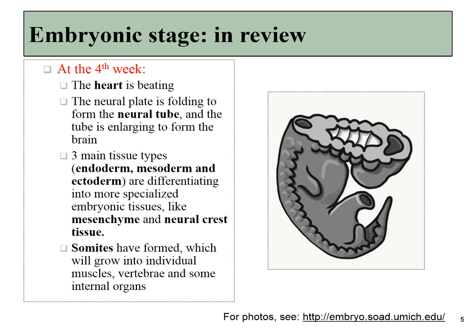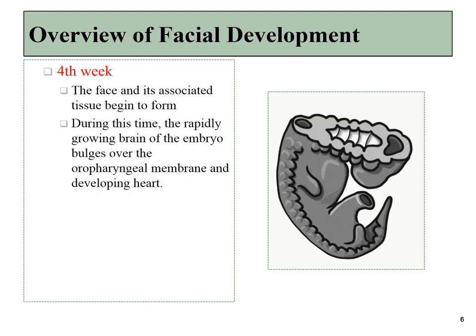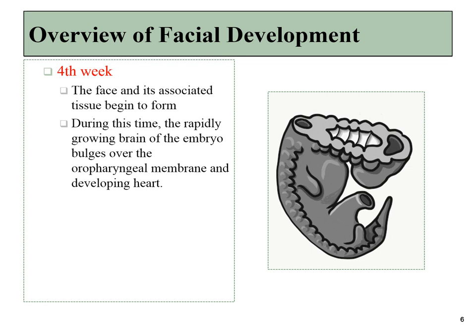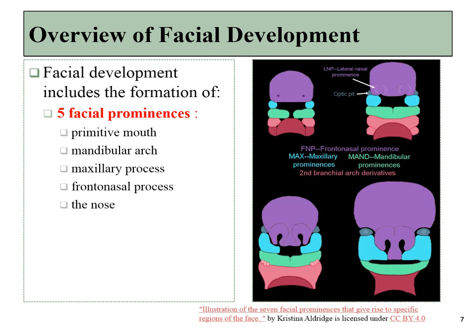These tissues will begin differentiating into mesenchyme and neural crest tissue. It is at this time that the face and other structures begin to form. Many of these structures will form as outward bulges as tissues proliferate and push outwards. These outward bulges can be divided into five prominences. We'll have the primitive mouth, a mandibular arch, and a maxillary process associated with it.